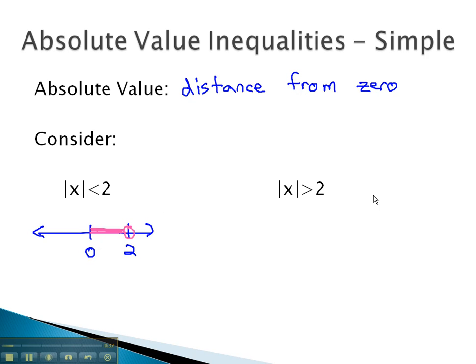But similarly, on the other side, you'll notice that at negative 2 back towards zero, those points also have a distance of less than 2. Well, we've seen this type of inequality before. This is simply a tripartite or three-part inequality: negative 2 is less than x, which is less than 2.